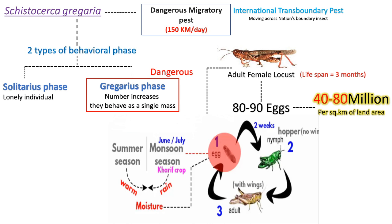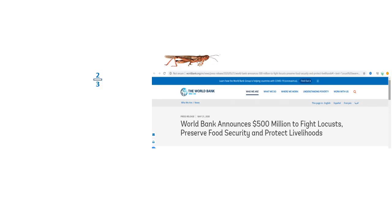Heat from the summer and good rainfall brings the moisture — it is a perfect time for many insects for laying eggs. The World Bank has announced 500 million dollars to address locusts in order to preserve food security and protect livelihoods.